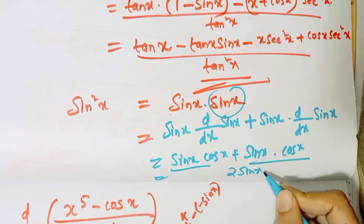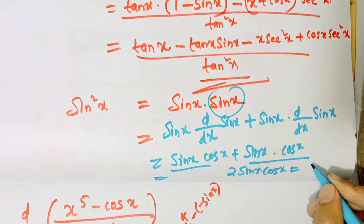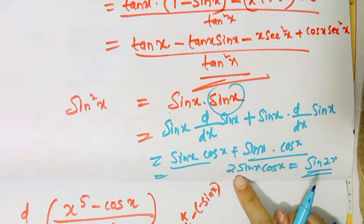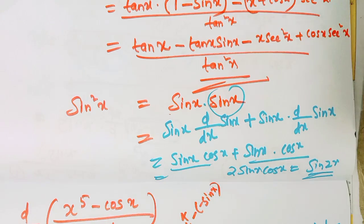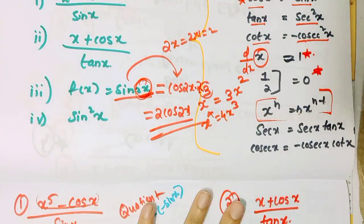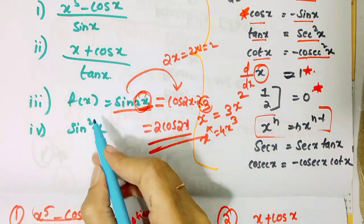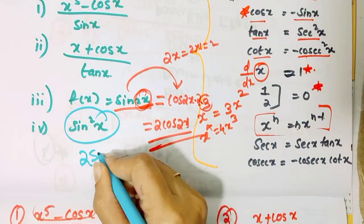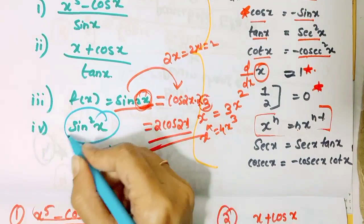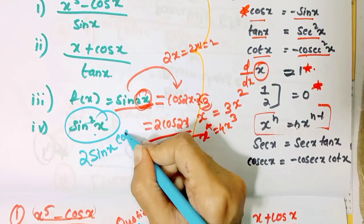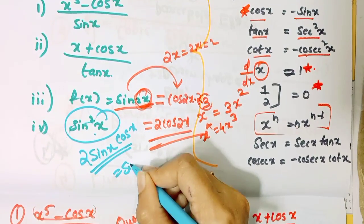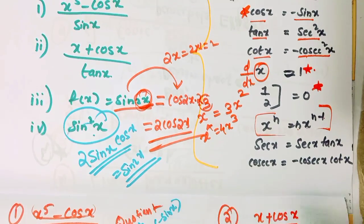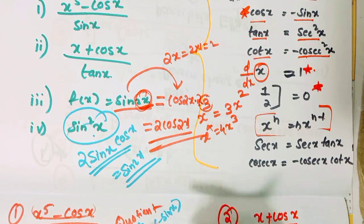2 sin x cos x is the result. And we know that 2 sin x cos x equals sin 2x. So sin x times sin x derivative simplifies to sin 2x. This uses the identity: 2 sin x cos x equals sin 2x. So the derivative of sin squared x is sin 2x.